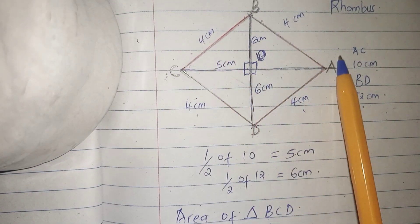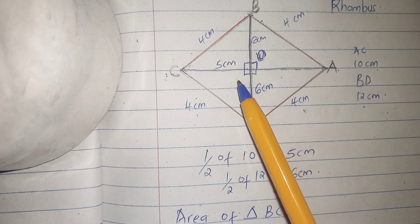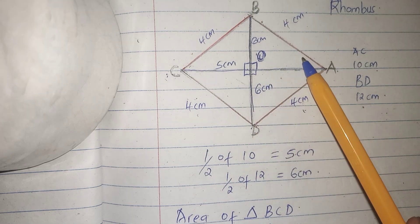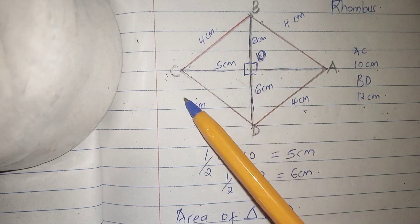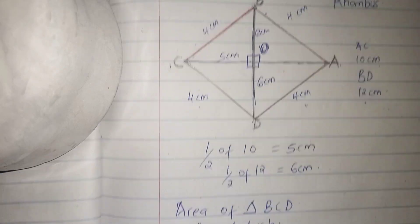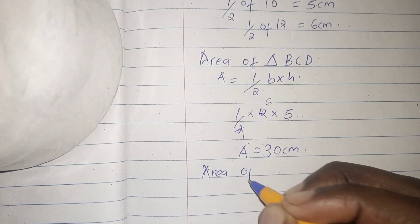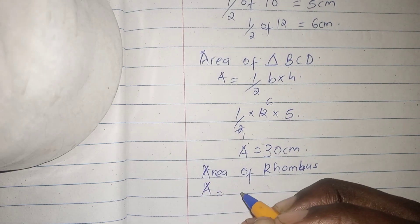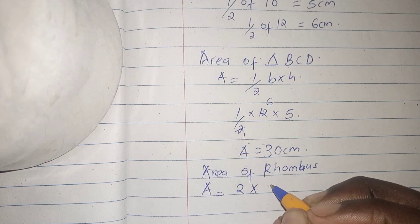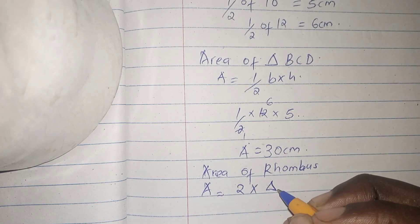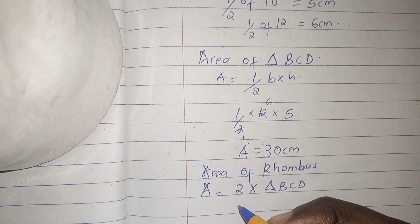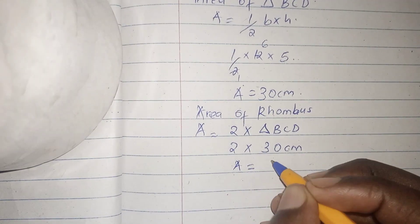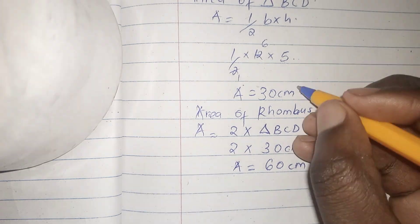To get the area of the rhombus, we multiply the area of triangle BCD by 2, since the two triangles are equal. Area of rhombus = 2 × 30 = 60 cm².